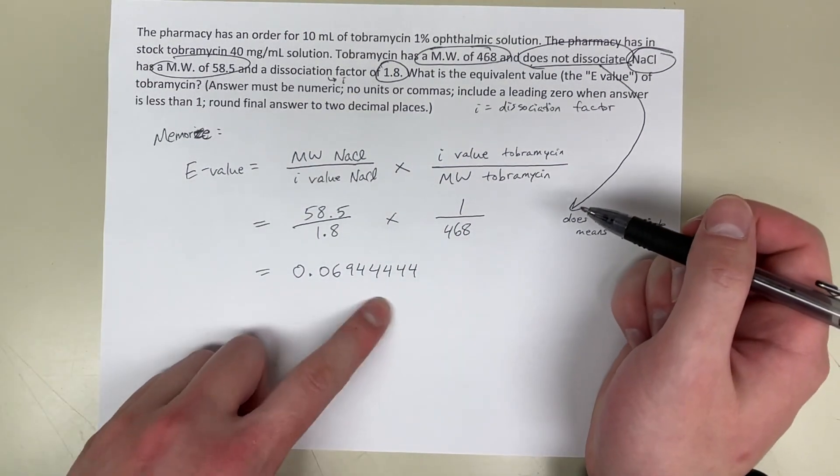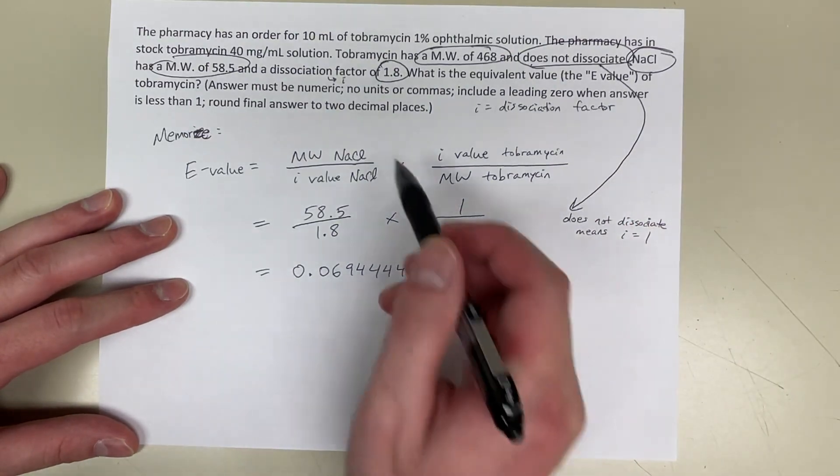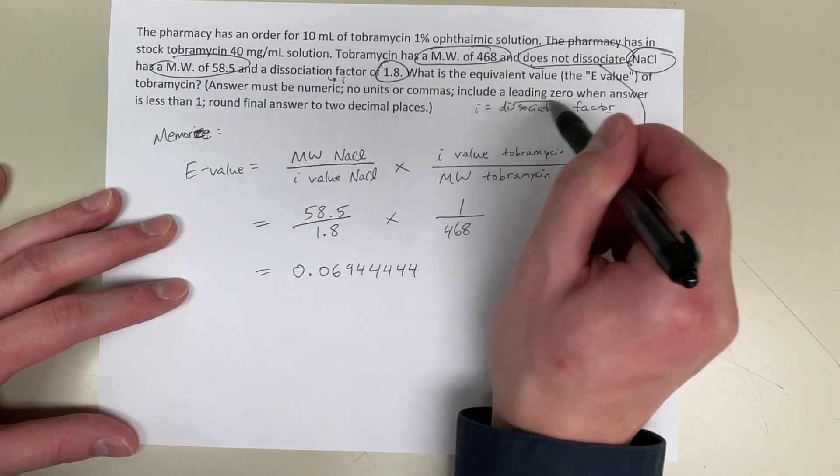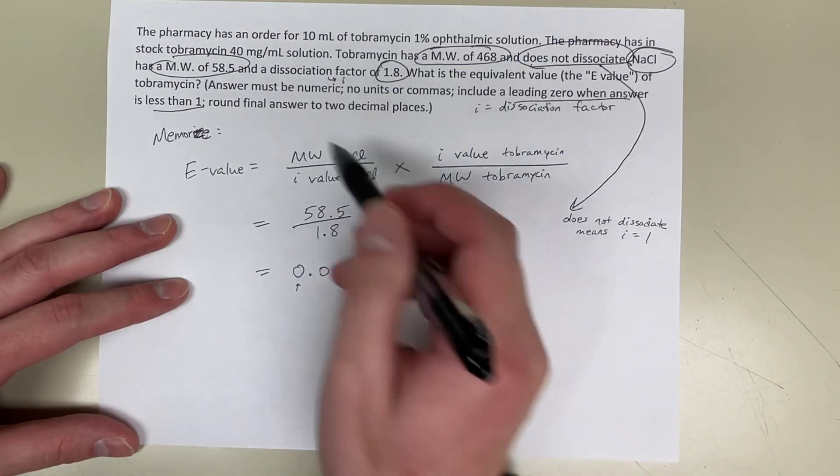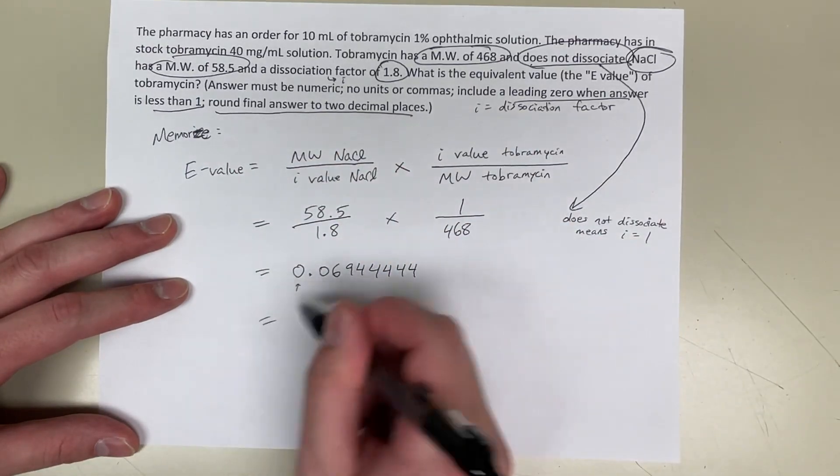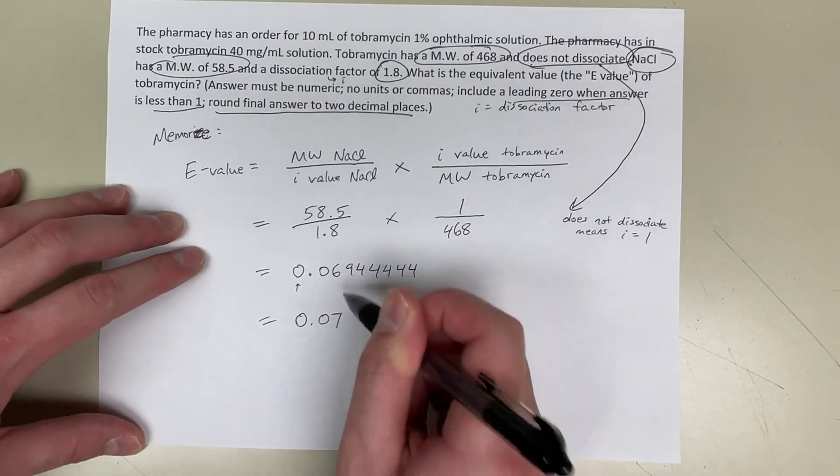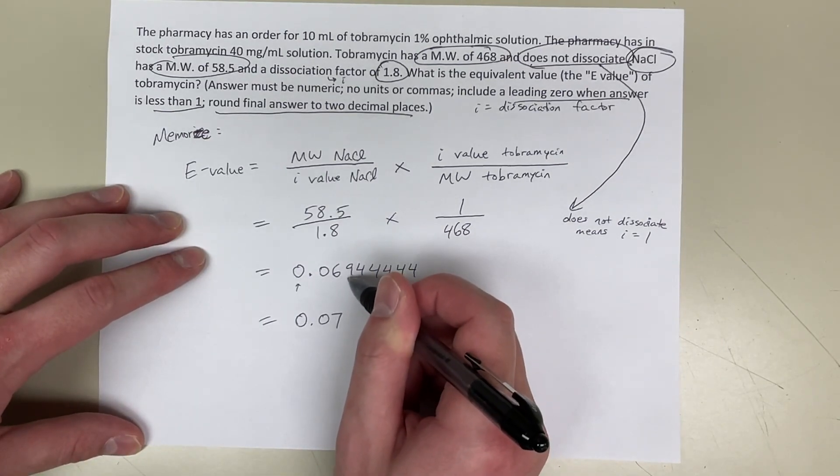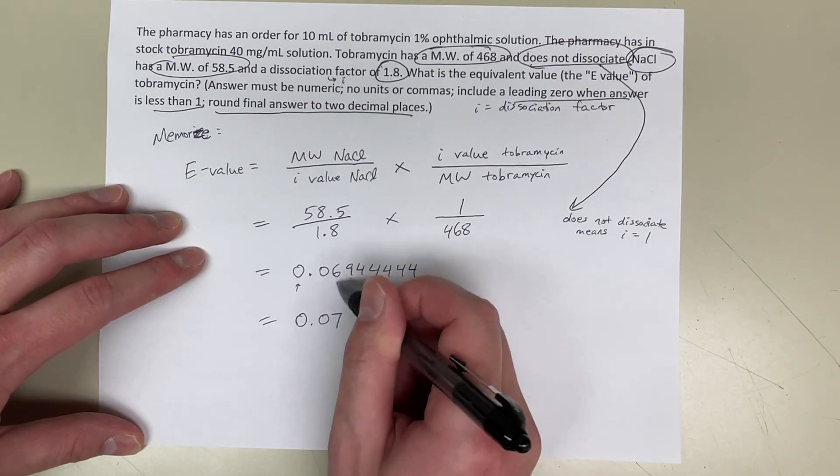Always keep as many decimal places as possible until your final result. This is our final answer. Include a leading 0 when the answer is less than 1, so make sure you keep this 0. Round the final answer to two decimal places, so that answer would be 0.07 because this third decimal place is a 9, so I round up to make this 7.